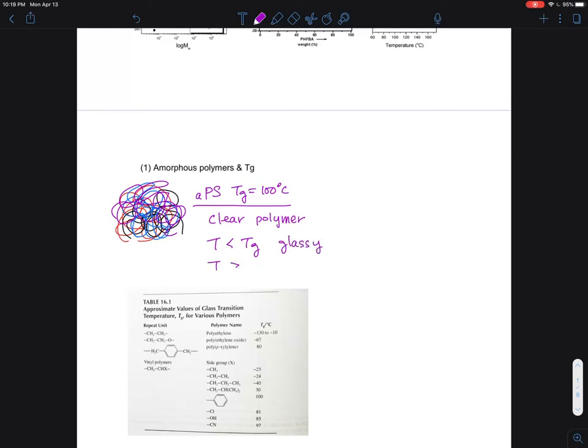We call it soft, so it can be processed and so on. If you have enough entanglement, this clear amorphous polymer can be useful for many applications.